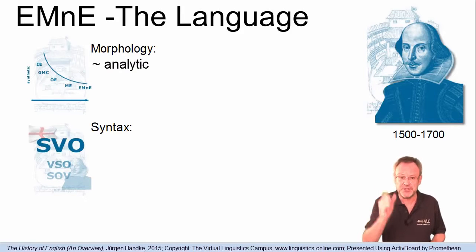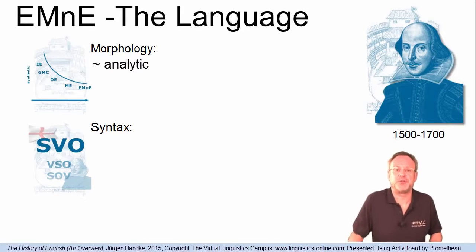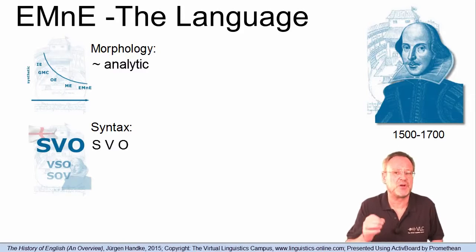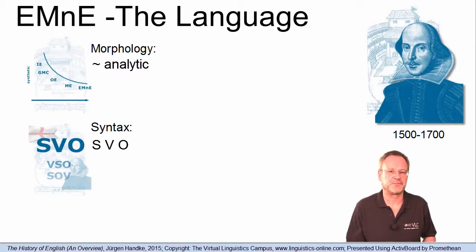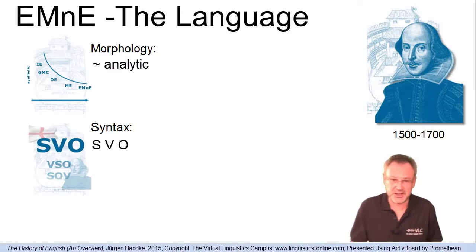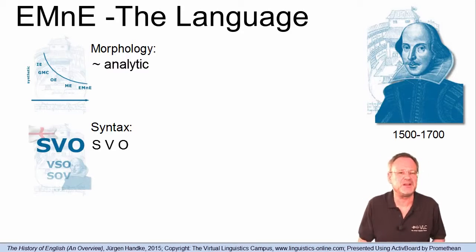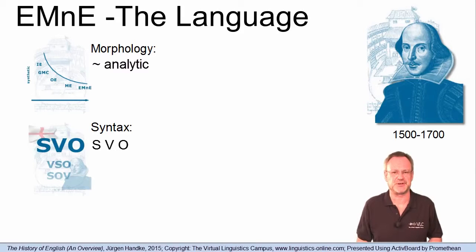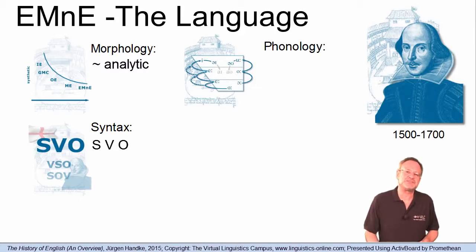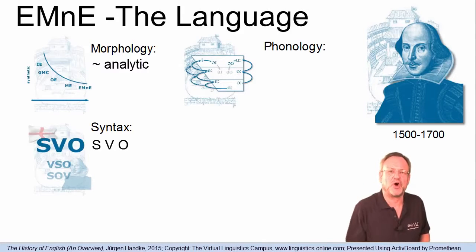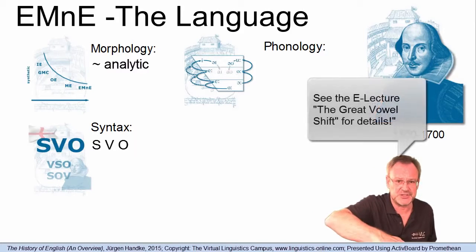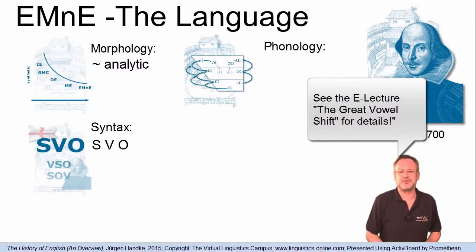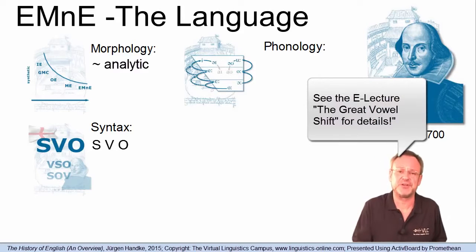Early Modern English was fairly analytic. The word order had already become quite fixed to subject-verb-object, due to a reduced inflectional system, and of the five Old English cases, only two had survived. The great change that classifies Early Modern English as a new period is mainly phonological in nature. Between 1450 and 1655, five of the seven long vowels of Middle English were raised, and two became diphthongized. This great vowel shift finally made English intelligible to the modern ear.